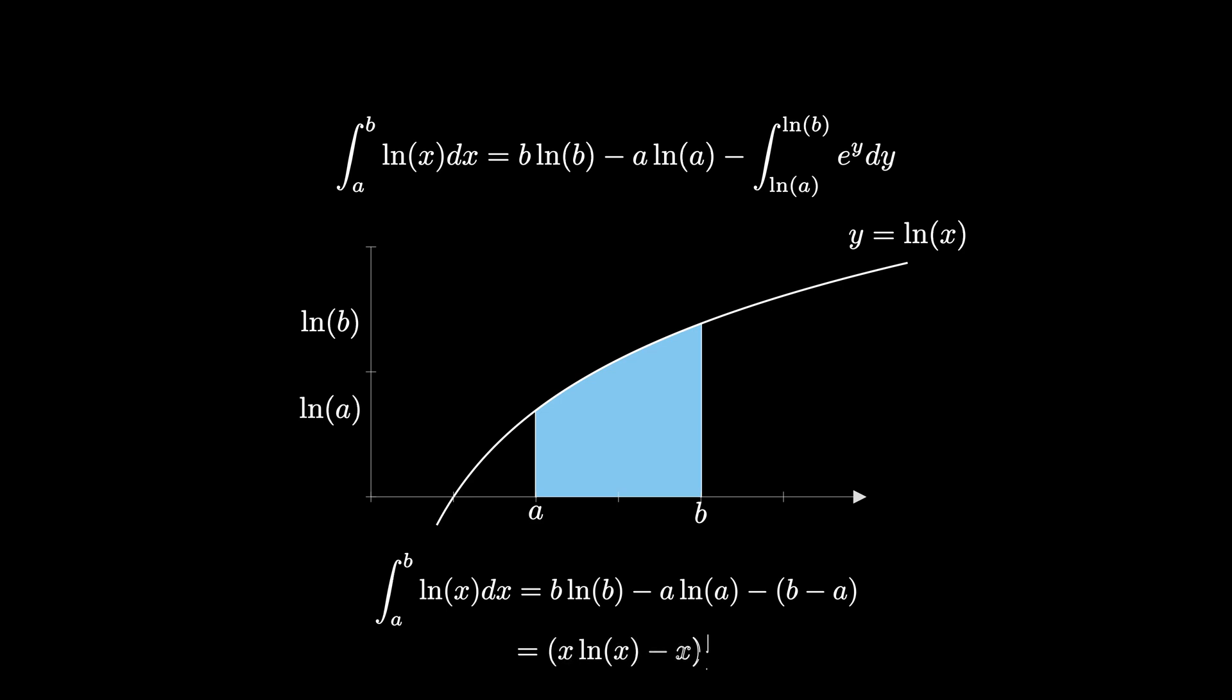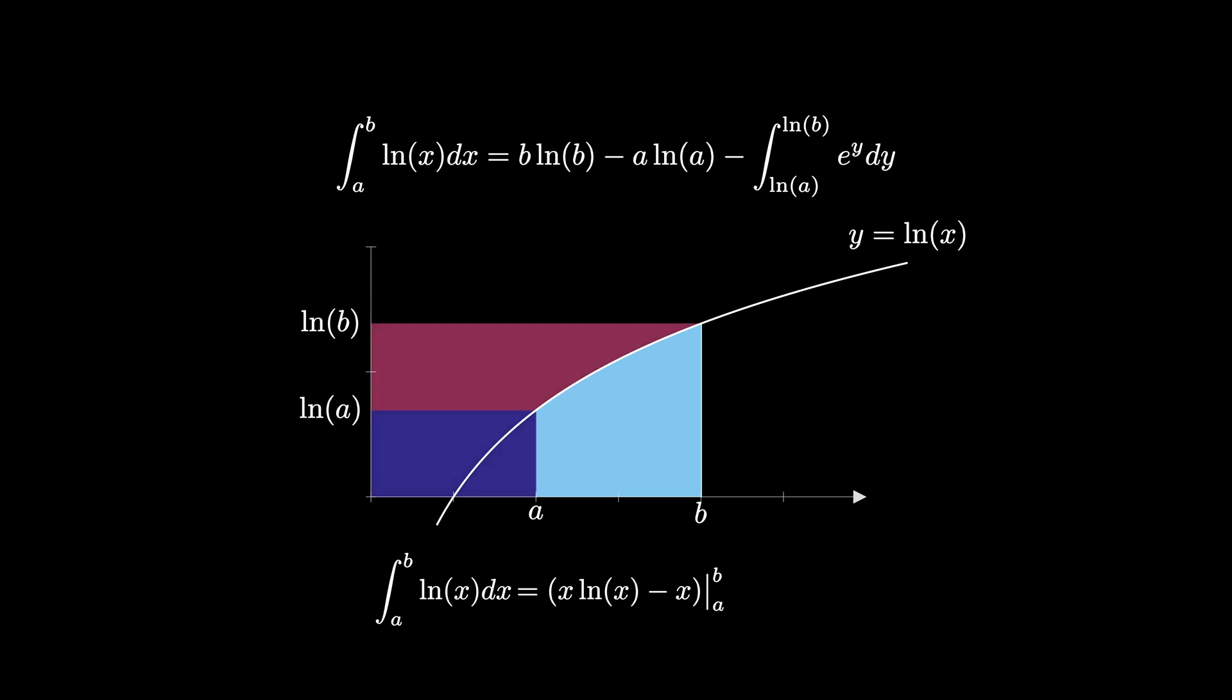By grouping the b terms together and the a terms together, we see that we get this as the difference of two terms of the form x times the natural log of x minus x, where x is b and x is a.